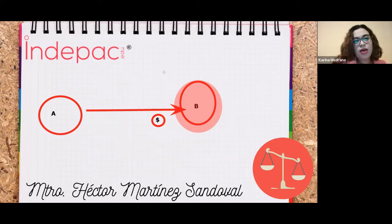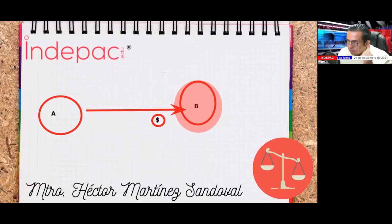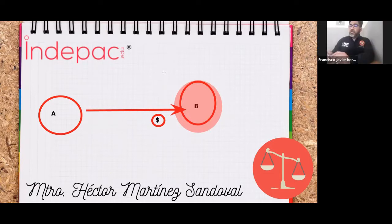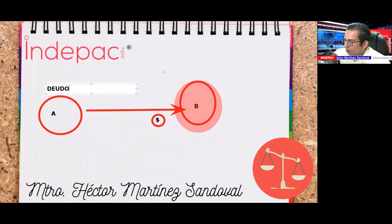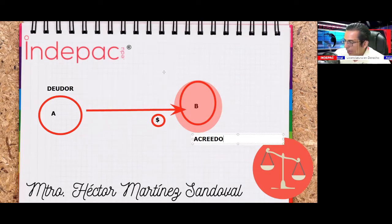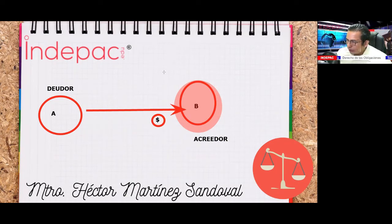A es el deudor, porque él no está cumpliendo con sus compromisos. Y B es el acreedor: él va a pedirle a A, como arrendador, que cumpla con sus compromisos porque él está pagando la renta. Viceversa: ahora lo que ocurre es que A cumple con todo lo que se comprometió con B, y B no está pagando la renta.